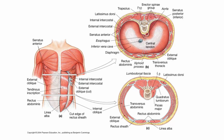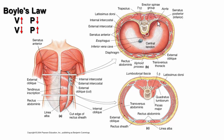Looking at a cross-section here, we can see the diaphragm, which is the main muscle of respiration. It's typically dome-shaped when relaxed. When it contracts, it flattens out, which increases the volume within the thoracic cavity. As Boyle's Law states, when you have an increase in volume, you get a decrease in pressure, and that's what draws air in.